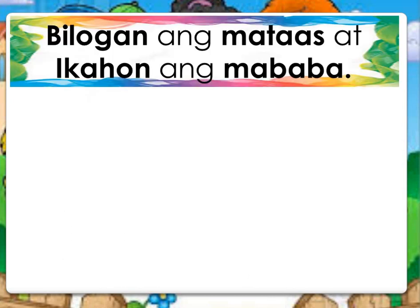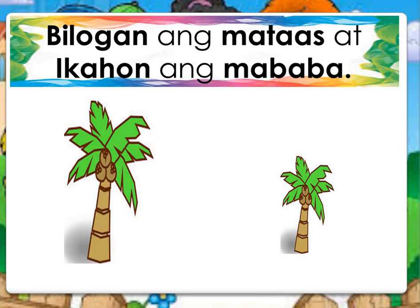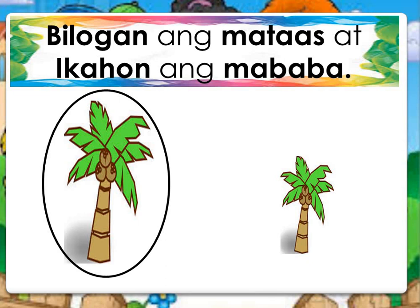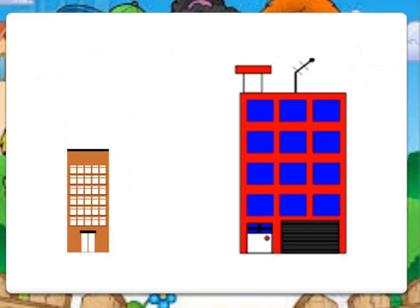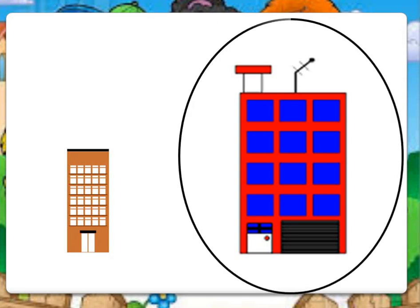Bilugan ang mataas at ikahon ang mababa. Alin dito ang mataas at alin dito ang mababa? Mataas. Mababa. Magaling. Alin dito ang mataas at alin dito ang mababa? Mataas. Mababa.